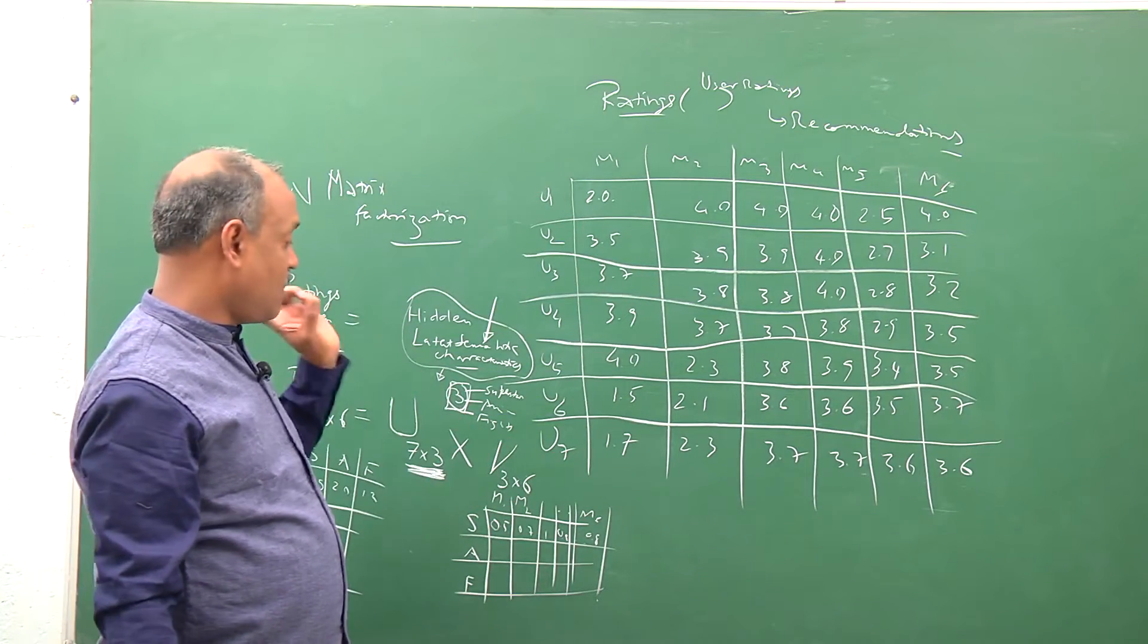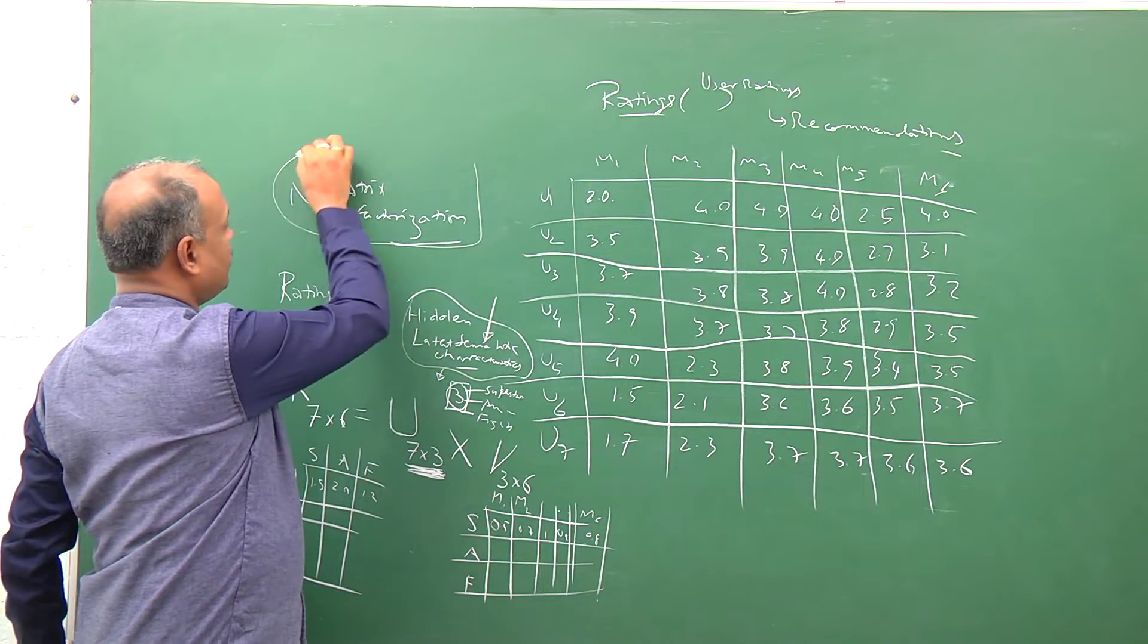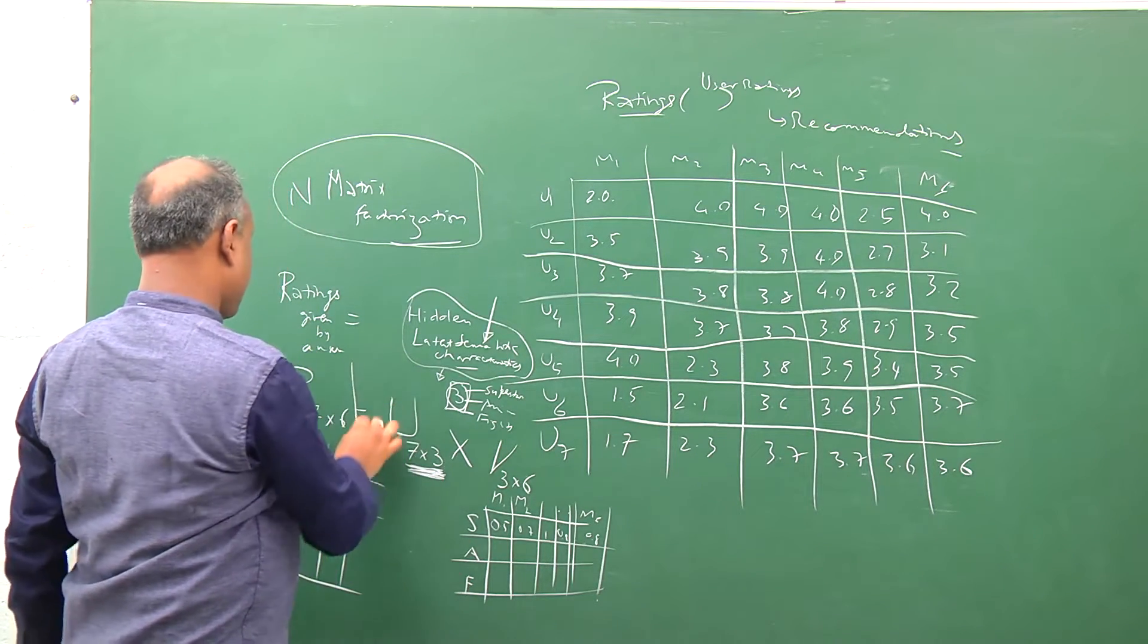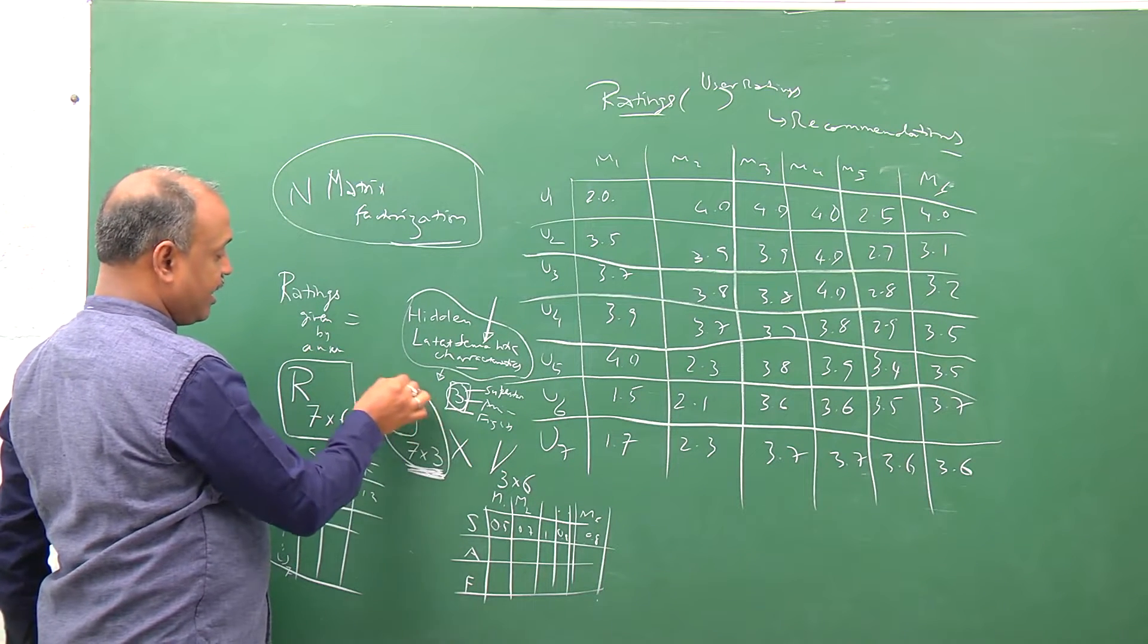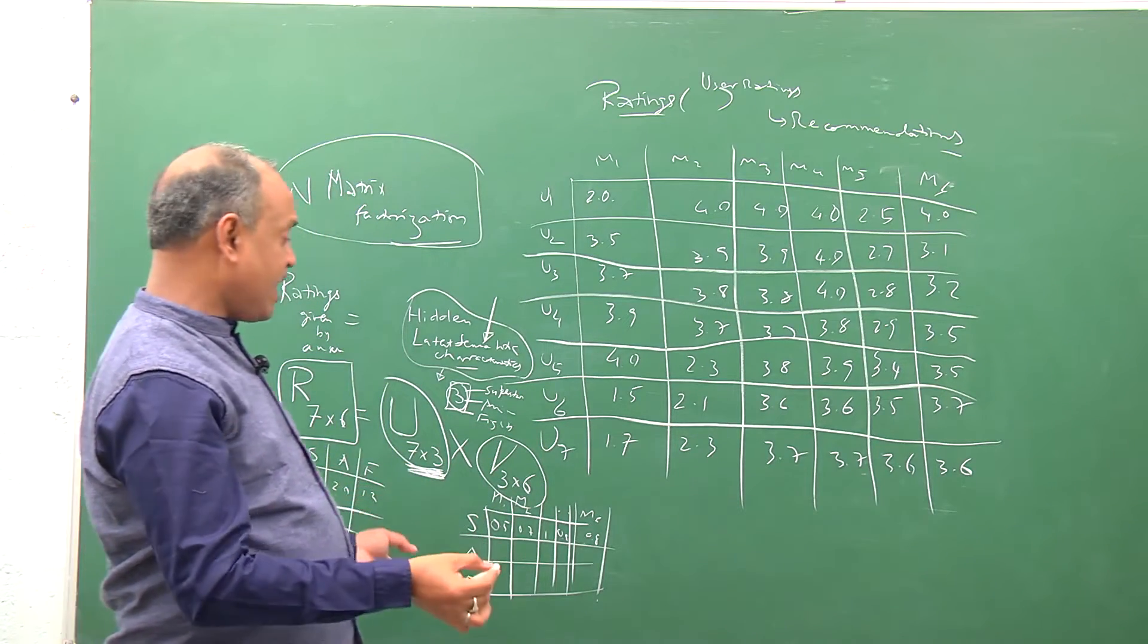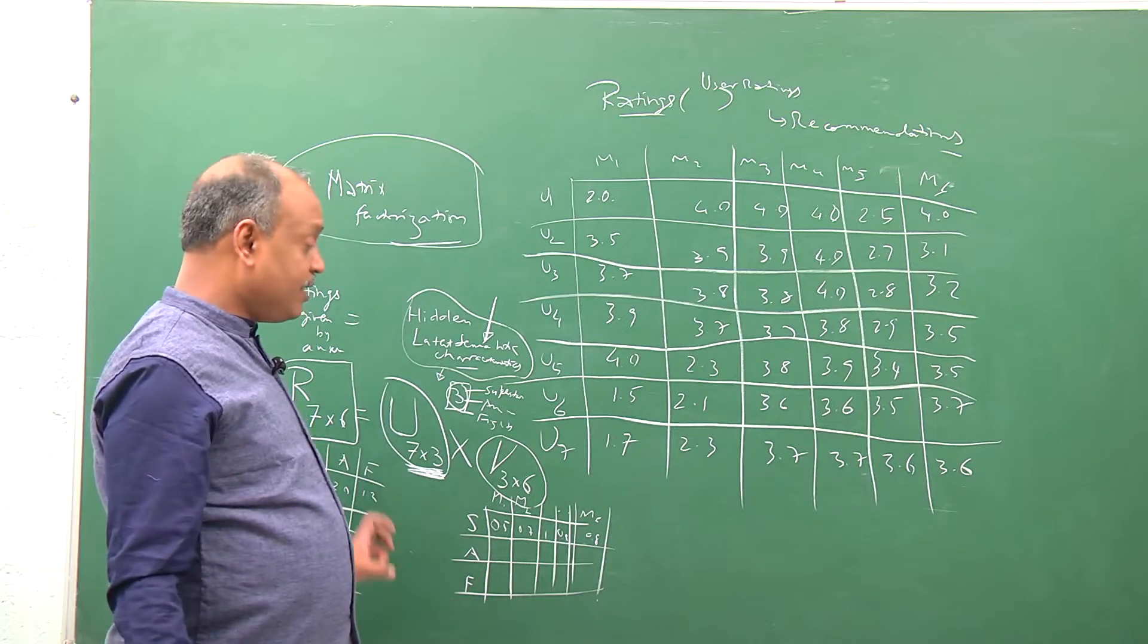And this is a very common machine learning problem in recommender systems where, given a ratings matrix, you try to discover the hidden characteristics. In this case we're talking about three characteristics - it could be four or five, but usually it's not a very large number. You decompose the original matrix into two matrices.